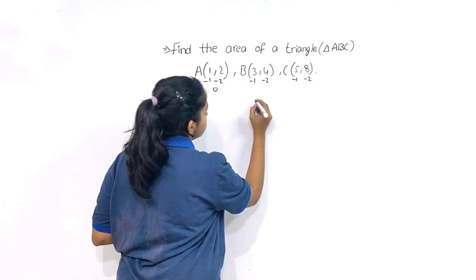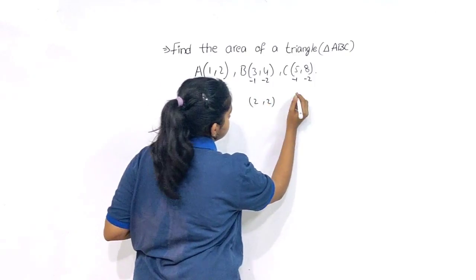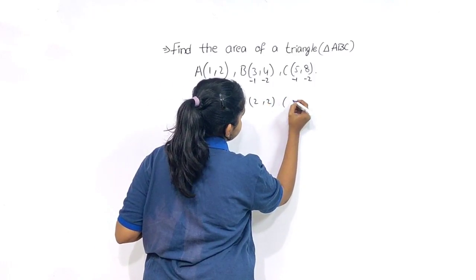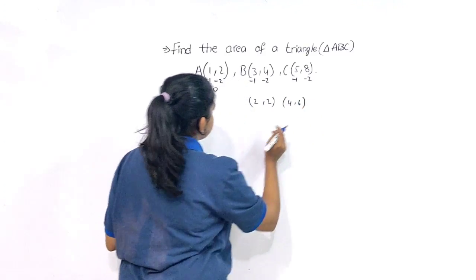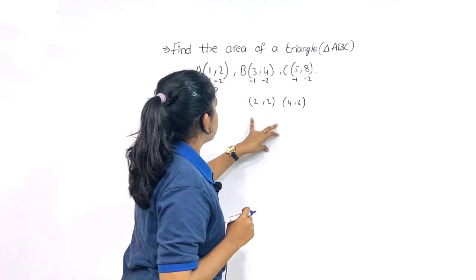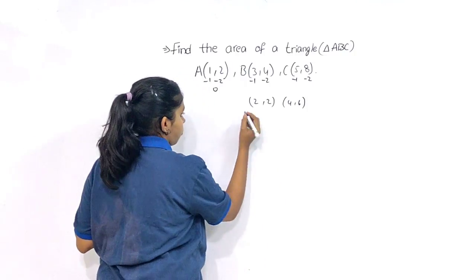So here we will get 2, 2 here, 4 and 6. Then we are taking the area of triangle formula.